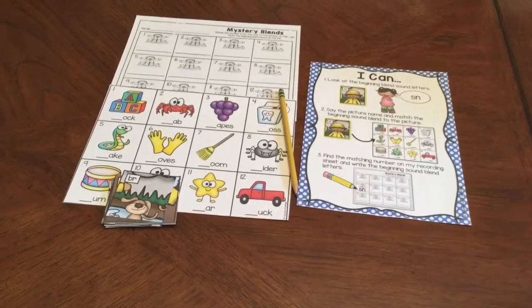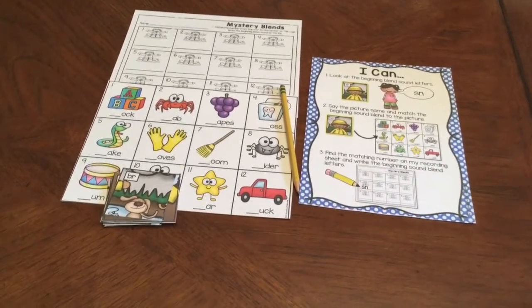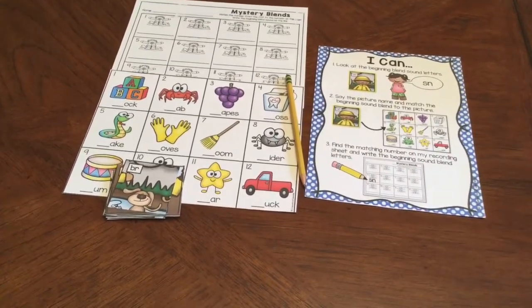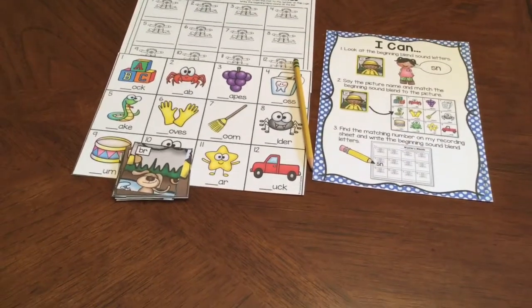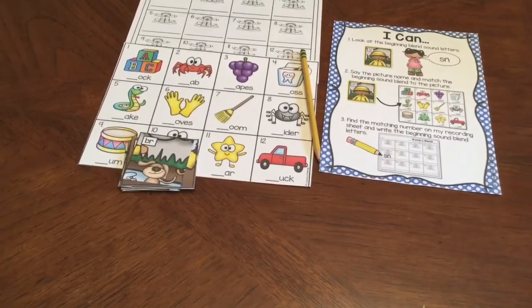Your I Can card, your recording sheet, the sheet with the numbers and pictures on it, and then the other pictures down there with the letters on it.